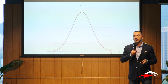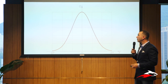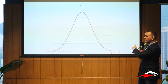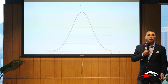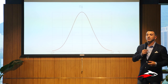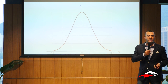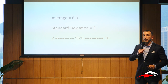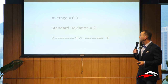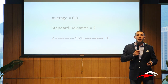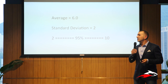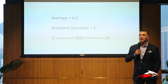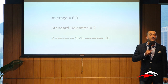The nice thing about this is that you can usually summarize the curve with a couple of numbers. This is called a Gaussian distribution, otherwise known as a normal or bell curve. You can sum it up: an average of 6 and a standard deviation of 2 means that 95% of your answers will fall between 2 and 10.